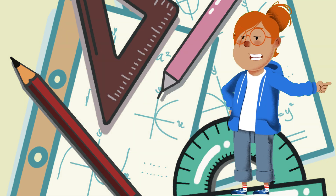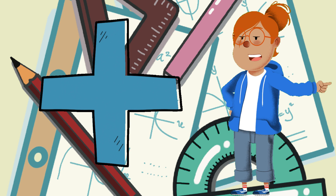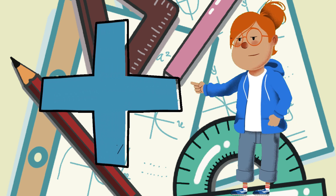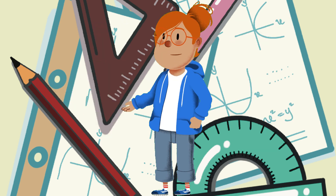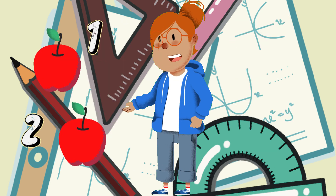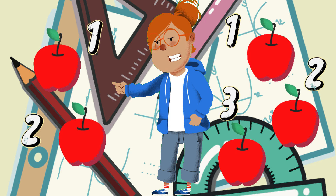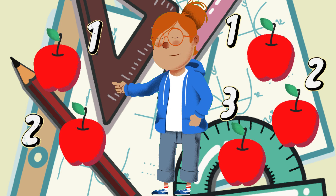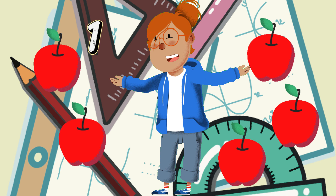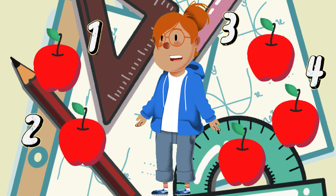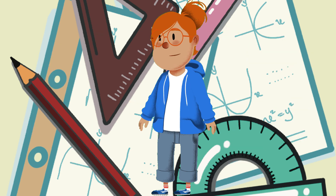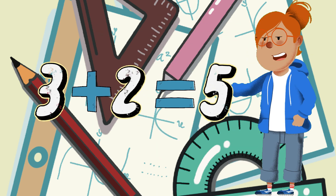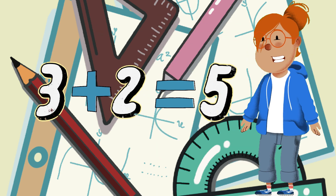First, let's talk about addition. Addition is all about putting things together. When we add, we combine two or more numbers to find the total. For example, if you have two apples and then get three more apples, how many apples do you have in total? Let's count them together: one, two, three, four, five. You have five apples. Great job! Addition is as simple as counting everything together.